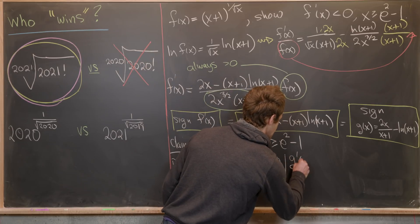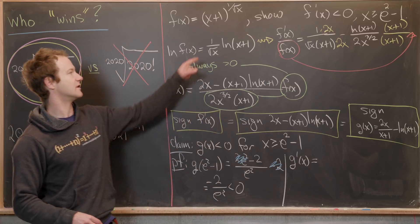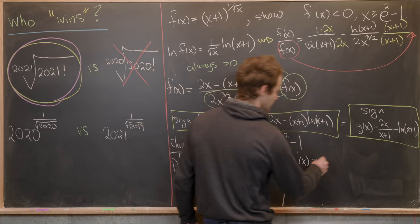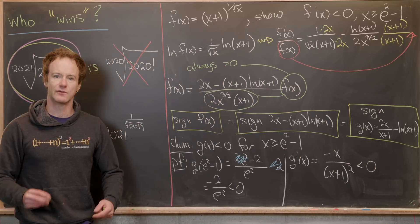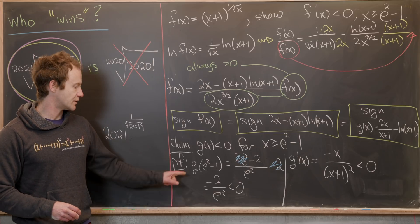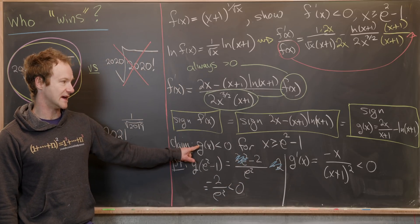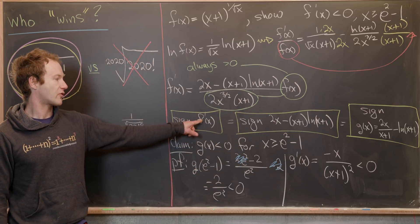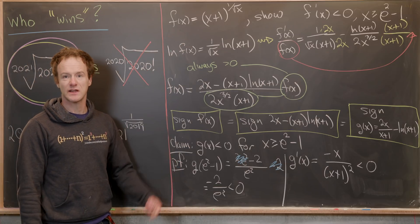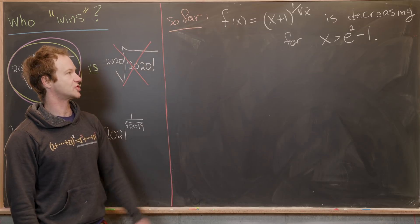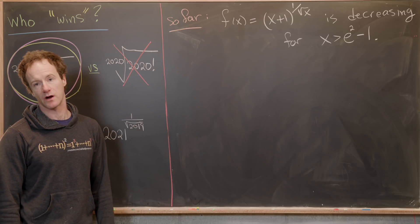Since g evaluated at e squared minus one is negative, and g is decreasing, g is always negative for x at least e squared minus one. But since g is always negative, f prime is always negative, which means f is decreasing. So our function x plus one to the power of one over the square root of x is decreasing for x greater than or equal to e squared minus one.